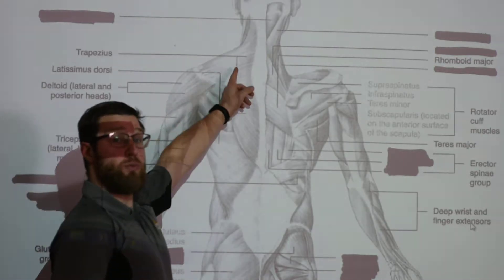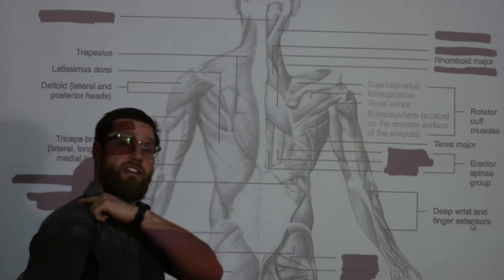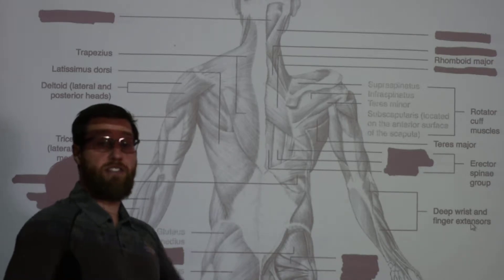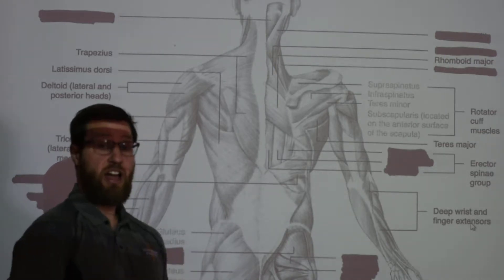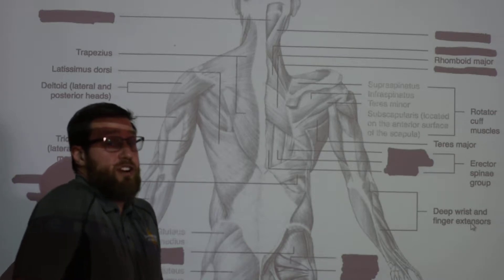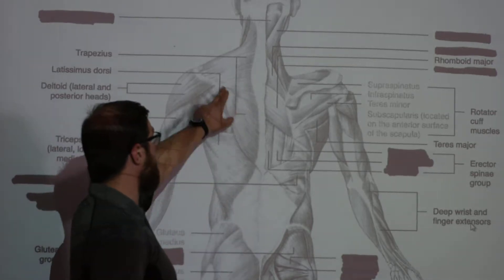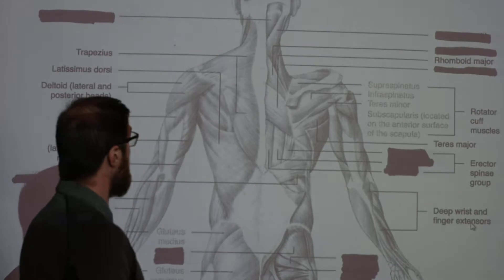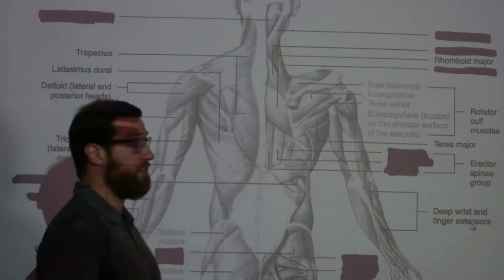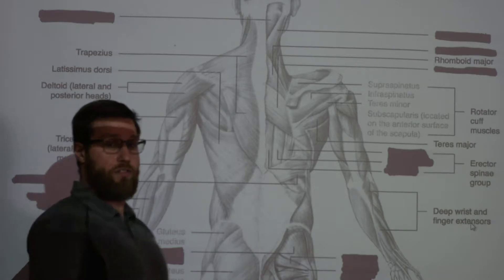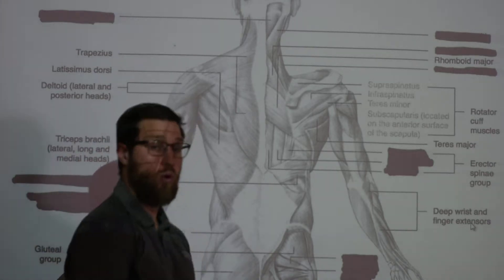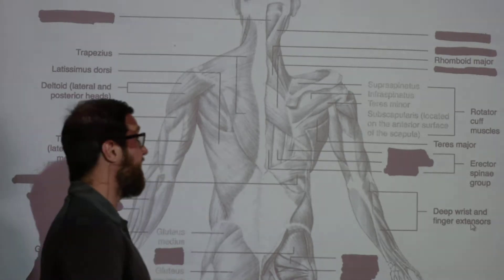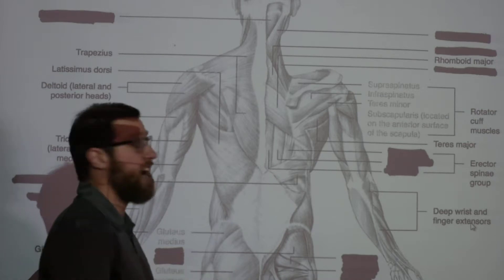Let's start with your trapezius. We looked at this on the anterior side — you can see a little bit of it on the superior part of your torso — but really it's a back muscle. It's involved in retraction of the shoulders, elevation, and also depression, because you have fibers going in different directions. You've got upper fibers, middle fibers, and lower fibers, but it's all your trapezius. It's a very superficial muscle, and if you roll your shoulders back, you get the full trapezius contraction.